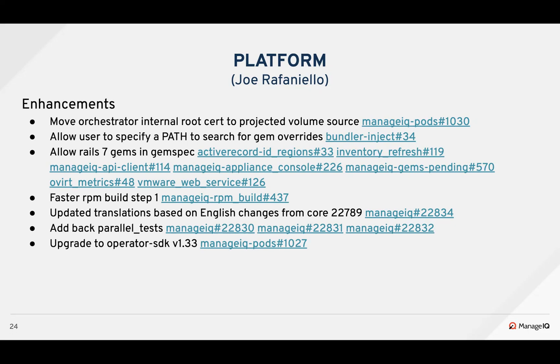For platform enhancements and improvements this sprint: Nasar moved the orchestrator root certificate to the projected volume source to enable mounting multiple certificates. Keenan improved bundler inject to allow developers to specify multiple overridden gems in the same directory. Several Rails 7 pull requests were made to allow standalone gems to be testable with Rails 7. RPM build improvements were made by excluding unnecessary files and using a faster version of brp-strip for stripping binaries. Updated translations were merged, Adam added back parallel tests to greatly improve developer test time with more CPU cores and multiple configured databases, and Brandon updated the operator SDK.